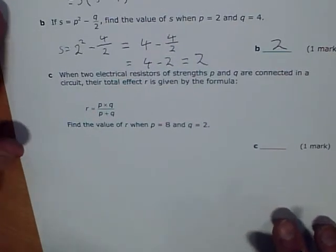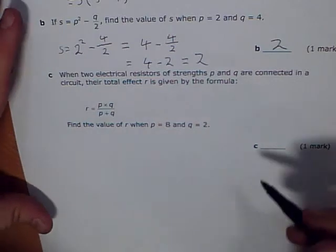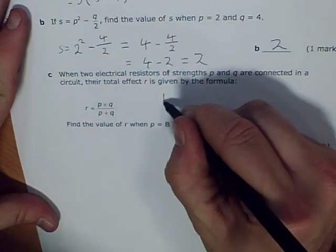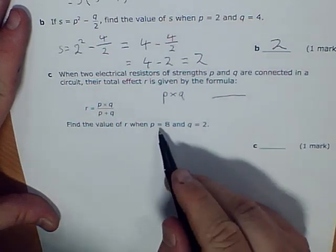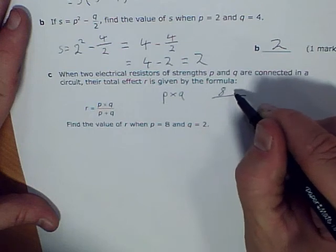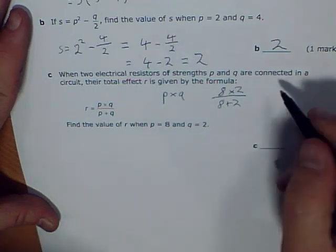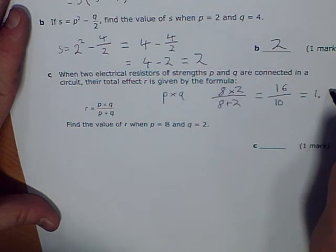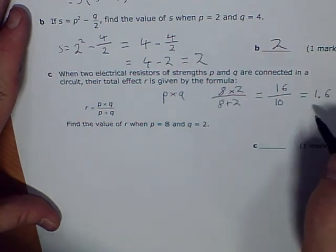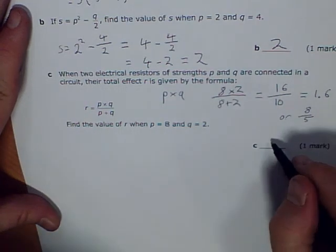Last question. When two electrical resistors of strength p and q are connected in a circuit, their total effect r is given by the formula r equals p times q divided by p plus q. So I'm going to substitute in p is 8, q is 2. That's 8 times 2 divided by 8 plus 2. So I've got 16 divided by 10, which equals 1.6, or 8 over 5 if you'd prefer.